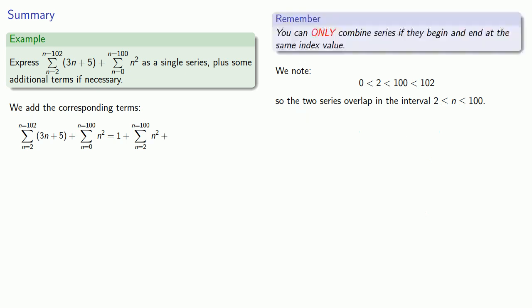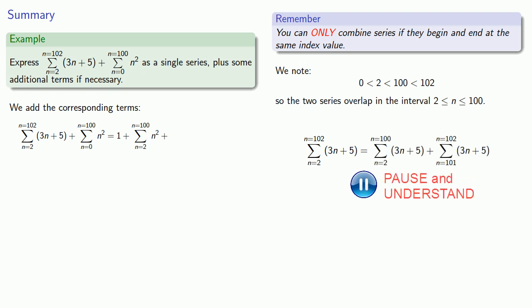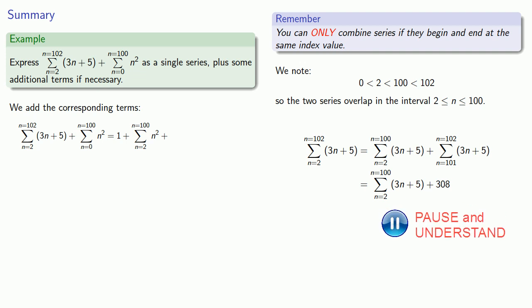Now let's take a look at the second series. Again, we'll split off the part that runs from 2 to 100, and then we'll have some leftover terms. We can keep the first part as that's part of the overlap, and the second part we will evaluate. If n equals 101, the term of the series is 308. And if n equals 102, the term of the series is 311. So we can add these two terms together, and we have an expression for the other series. So we can replace that.